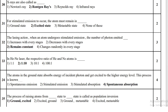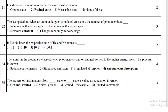During lasing action, when an atom undergoes stimulated emission, the number of photons emitted remains constant. In a helium-neon (He-Ne) laser, the respective ratio of helium to neon atoms is 1:10. An atom in the ground state absorbs energy of an incident photon and gets excited to a higher energy level; this process is known as spontaneous absorption.